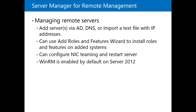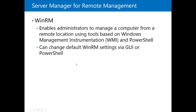The Server Manager for remote management gives you the option to add server roles remotely. Basically, I can make a server Active Directory, DNS, or I can import a text file with IP addresses and add role switches just as if I am in front of the box. The only things I cannot do remotely are physically touch the server, press the shutdown button, or pull out the network card. Keep in mind, WinRM — Windows Remote Management — is enabled by default on 2012. This is a popular exam question.